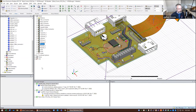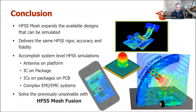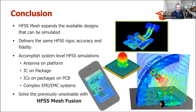HFSS mesh fusion expands the available designs that can be simulated, delivering the same HFSS rigor, accuracy, and fidelity you're used to. It allows you to do system simulations: antennas on platforms, ICs on packages, ICs on packages on PCBs, complex systems for EMI/EMC — solving the previously unsolvable. You can see some of these pretty complex designs that it enables.